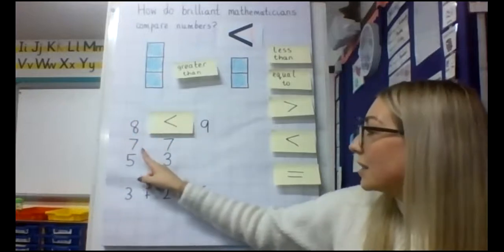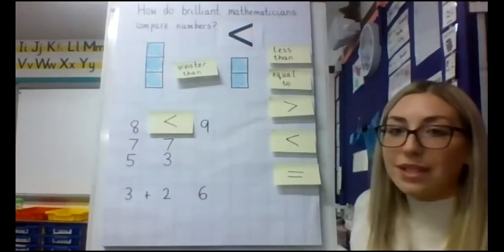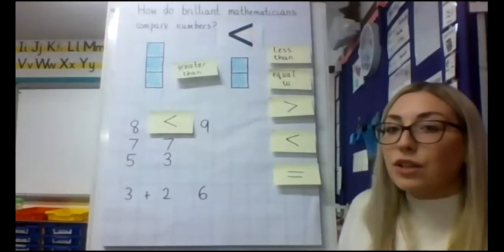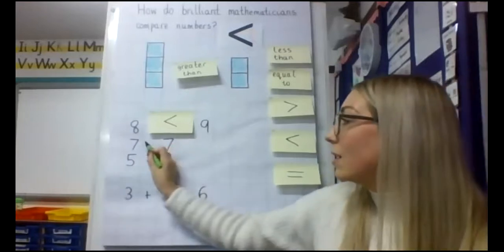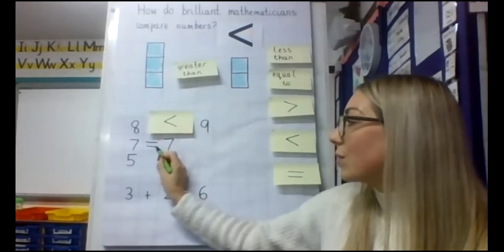The same as seven and seven, well, we know that seven and seven are exactly the same, so they are equal. So in here, I would put my equal symbol.